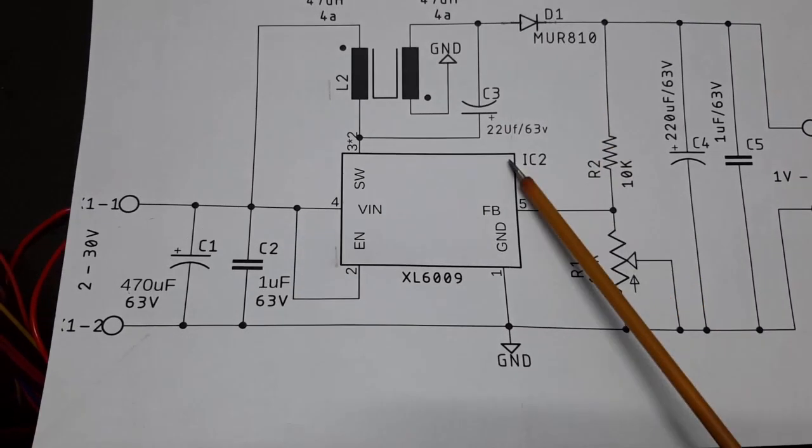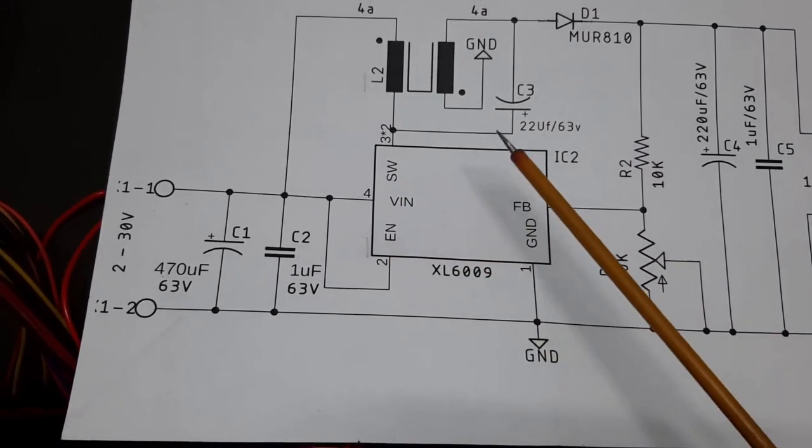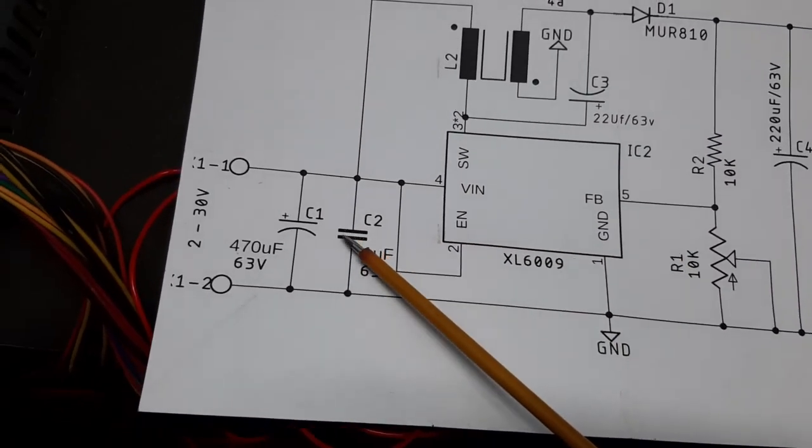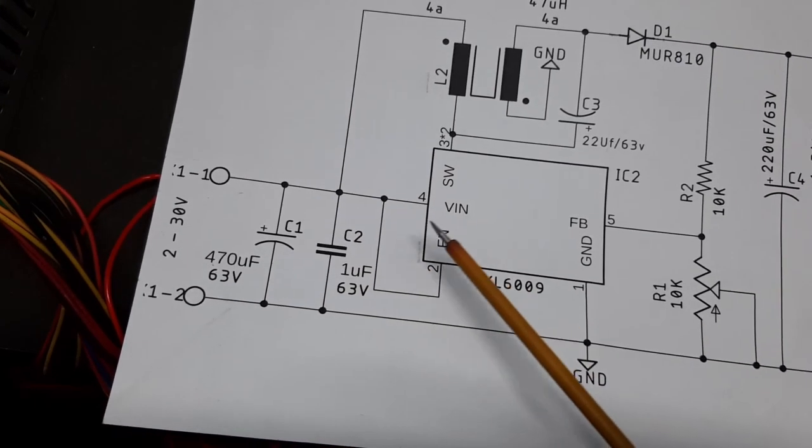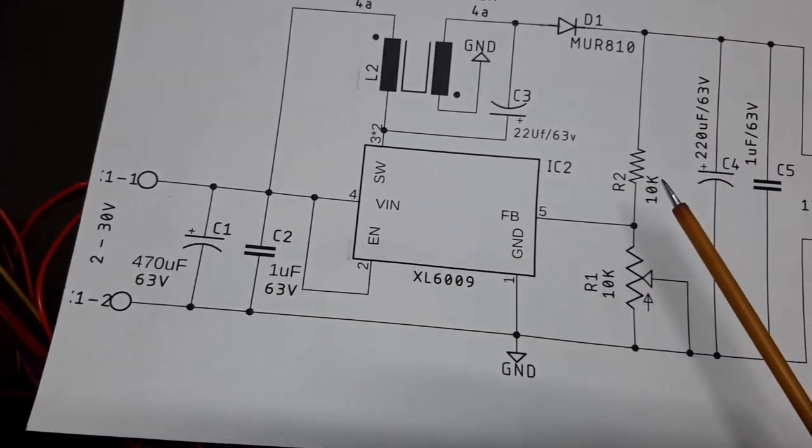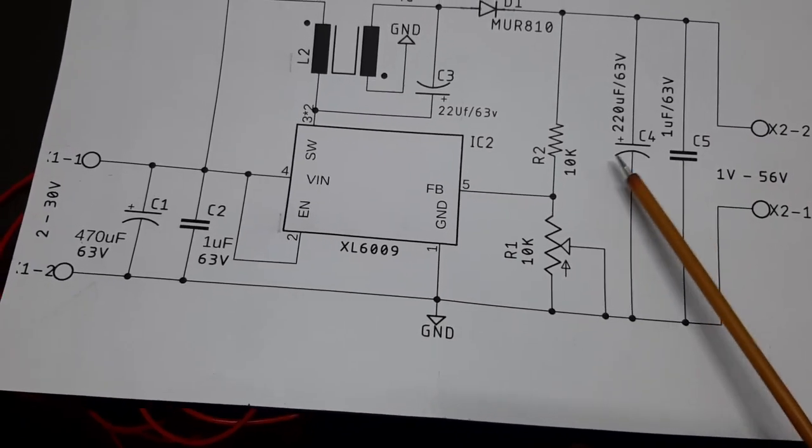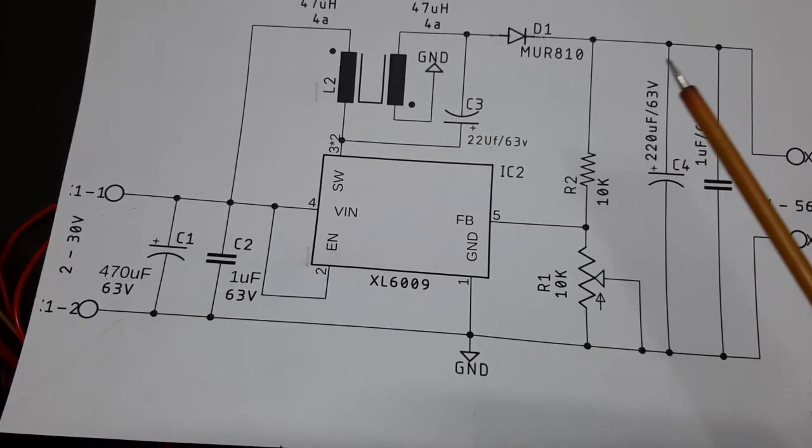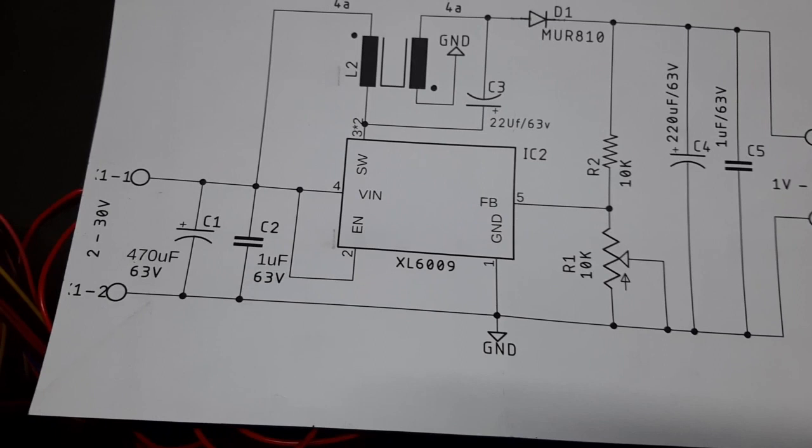The input voltage range is 2 to 30 volts. We have our input capacitors, the feedback resistors, and output resistors. In terms of complexity, this circuit is very simple.